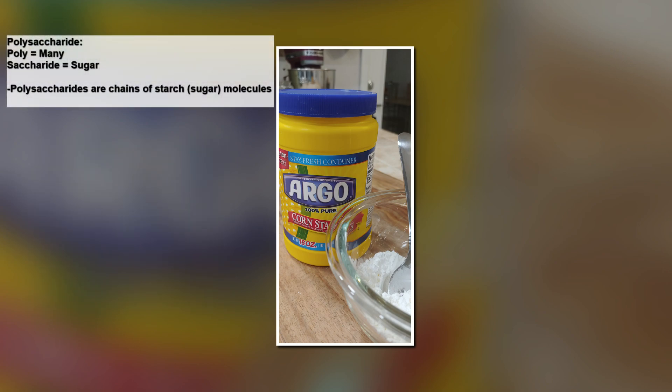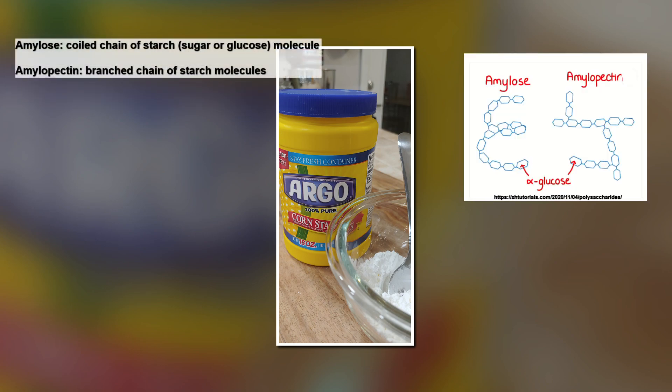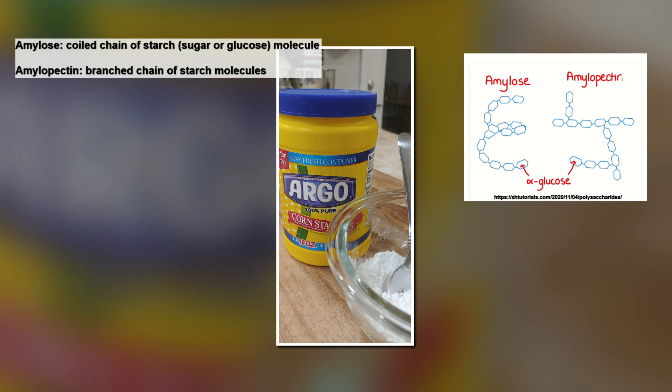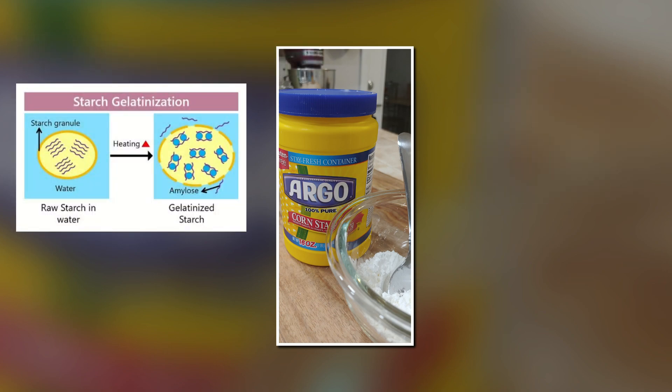Poly means many, and saccharides means sugar, so cornstarch is really a bunch of sugars. The sugars are made up of amylose and amylopectin. If you've watched our cinnamon rolls remixed video, we go into a lot of depth about amylose and amylopectin there, so please check that out. But amylose and amylopectin are the starches that really make up cornstarch.